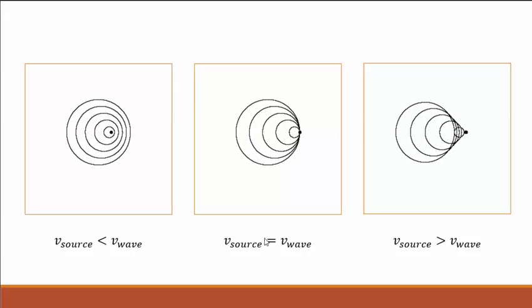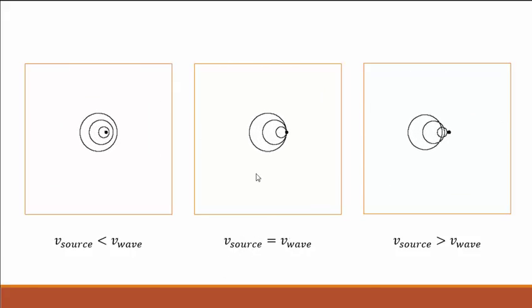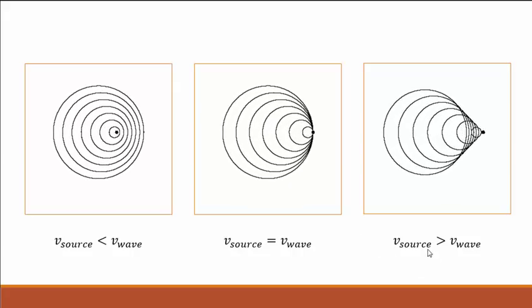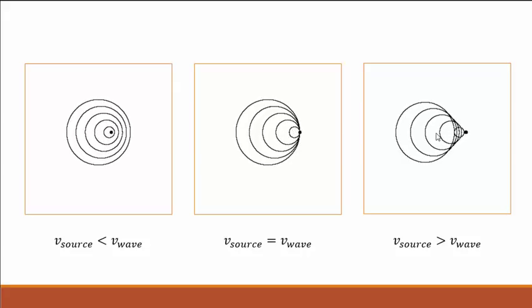Here, the wave speed equals the speed of the source. I guess on the last one, we called this the speed of the object. I should have been consistent with that. Sorry. And here, the source is moving faster than the waves.